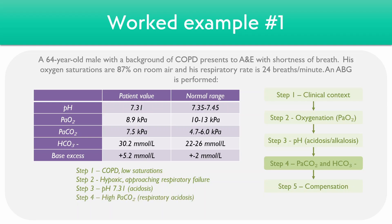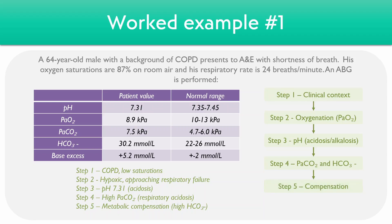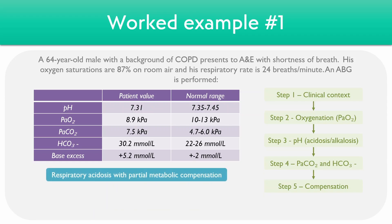For the final step, we can see if there's any compensation present. The bicarbonate levels are higher than the normal range, so the body is trying to compensate by retaining more HCO3-. Putting all of this information together, this is a respiratory acidosis with partial metabolic compensation — and it's partial because the pH has not returned to normal range.